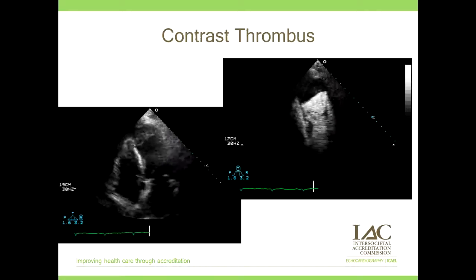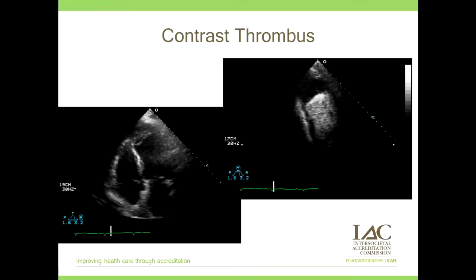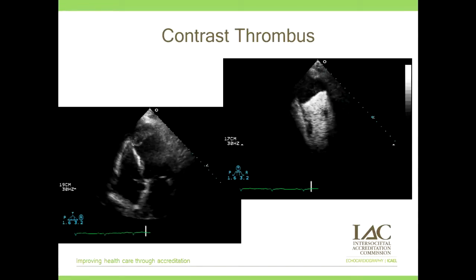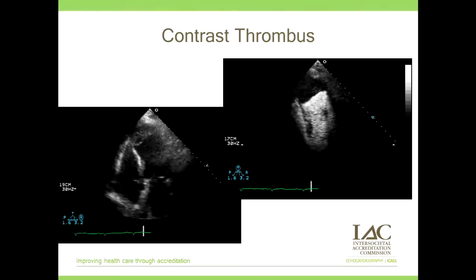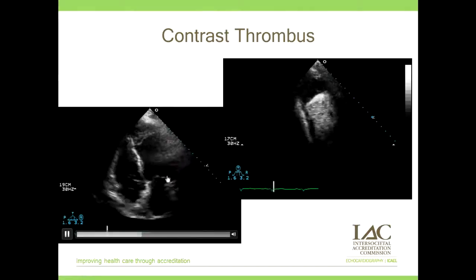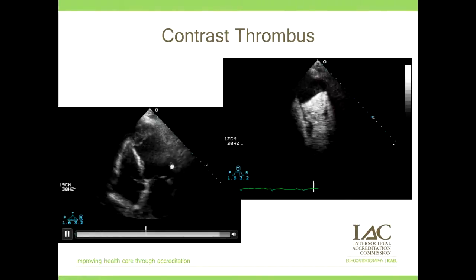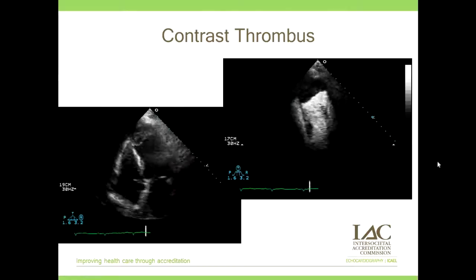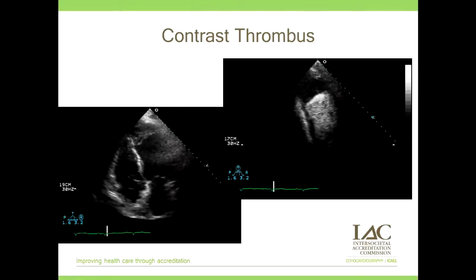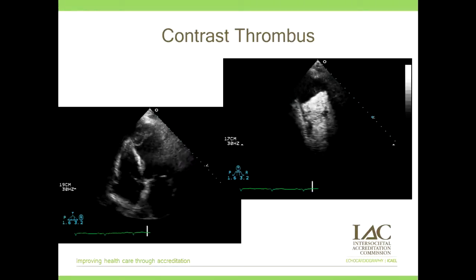Our next case is one where we utilize contrast for a thrombus in the apex of the left ventricle. You can see a fairly decent apical four-chamber view with a thrombus in the apex. The reason we gave contrast was because of the lateral wall of the left ventricle, where we don't see it as clearly. After contrast, you can better define the wall motion in that area, and it very nicely brings out the thrombus in the apex.